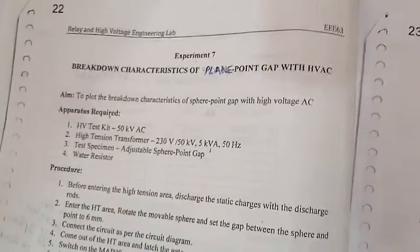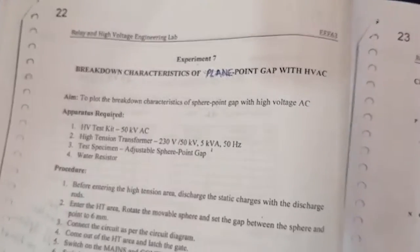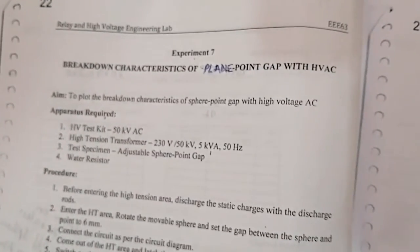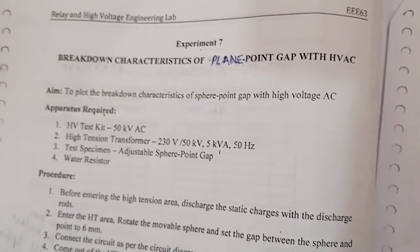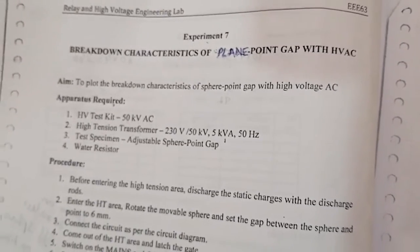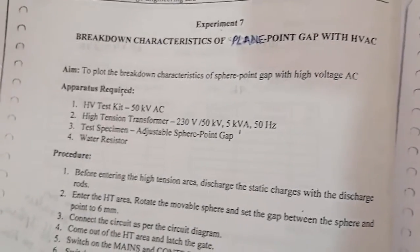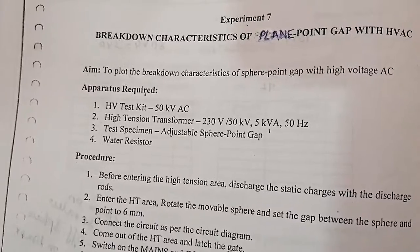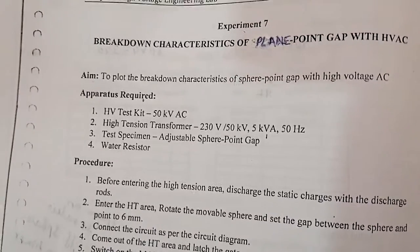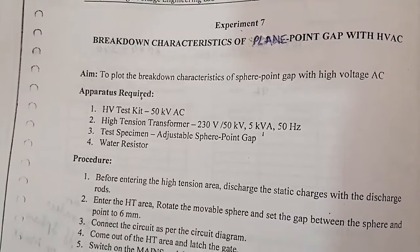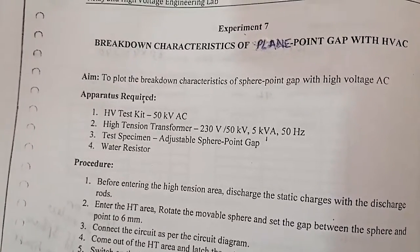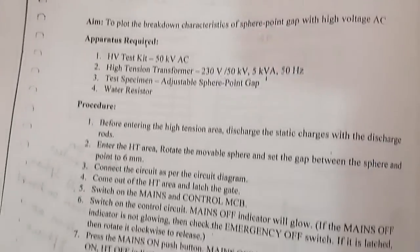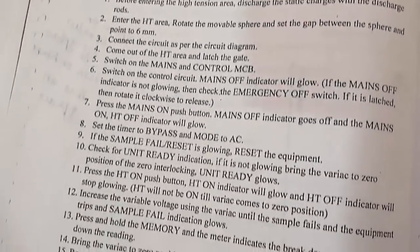The experiment name is 'Breakdown Characteristics of Plane-Point Gap with HVAC.' In this experiment on characteristics of a plane-point gap with HVAC, we are going to observe one effect called the Corona effect. The Corona effect is the main phenomenon which we will observe here.